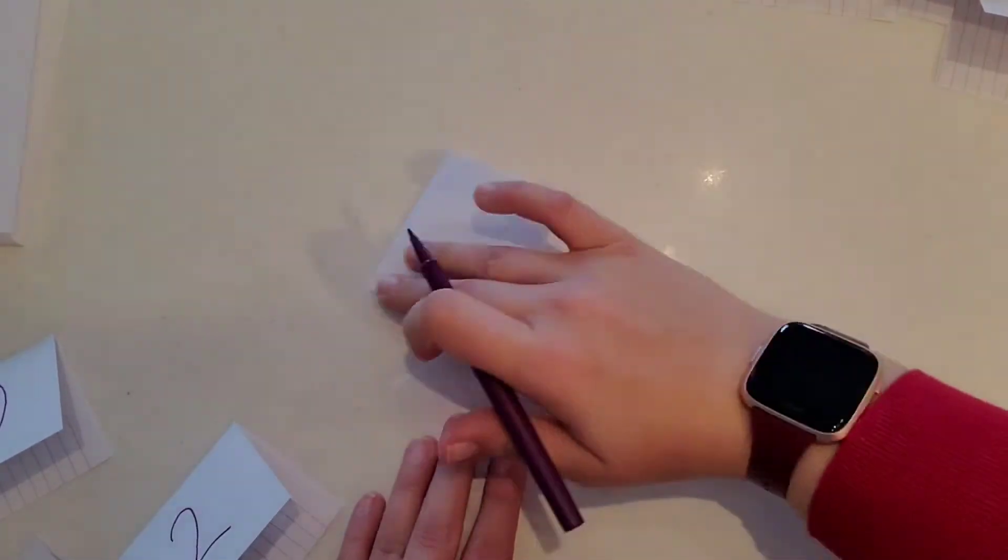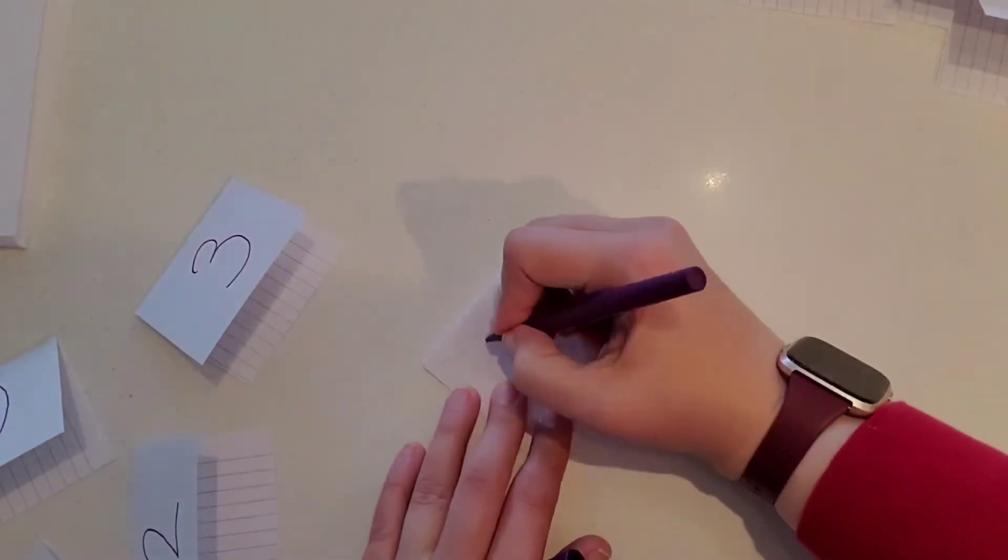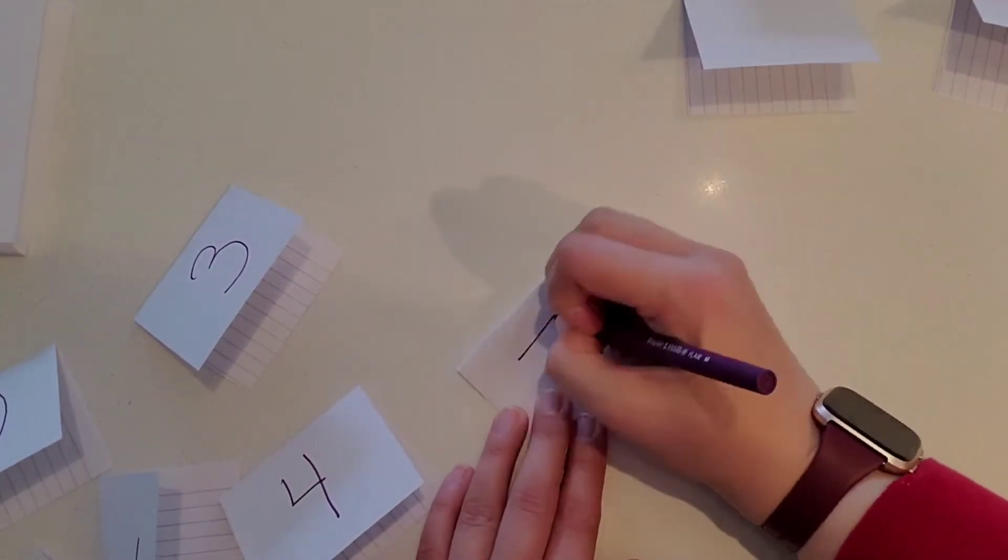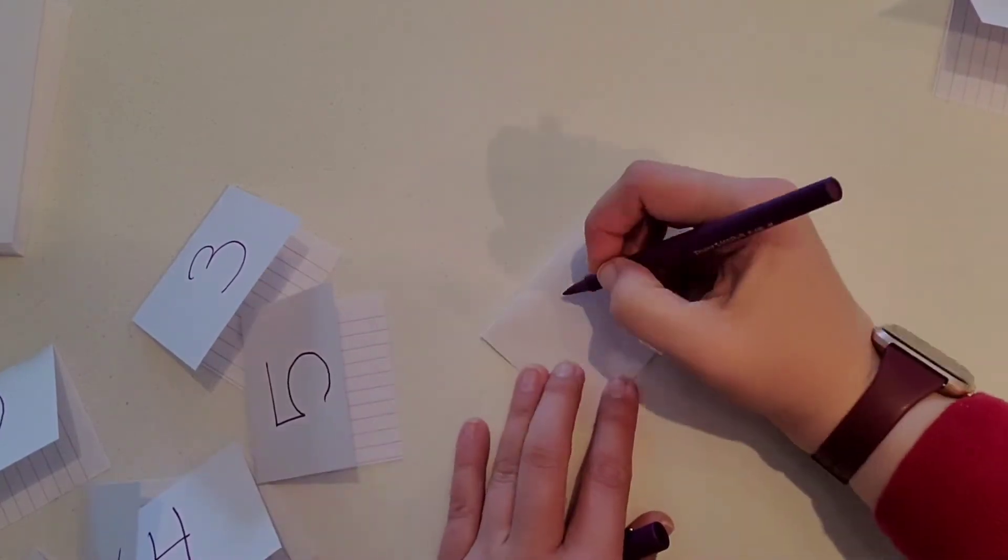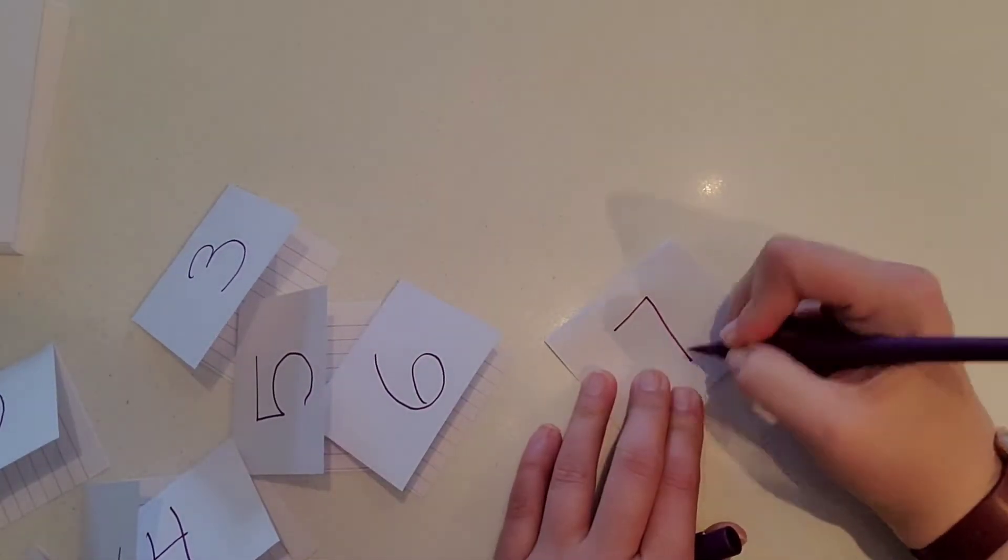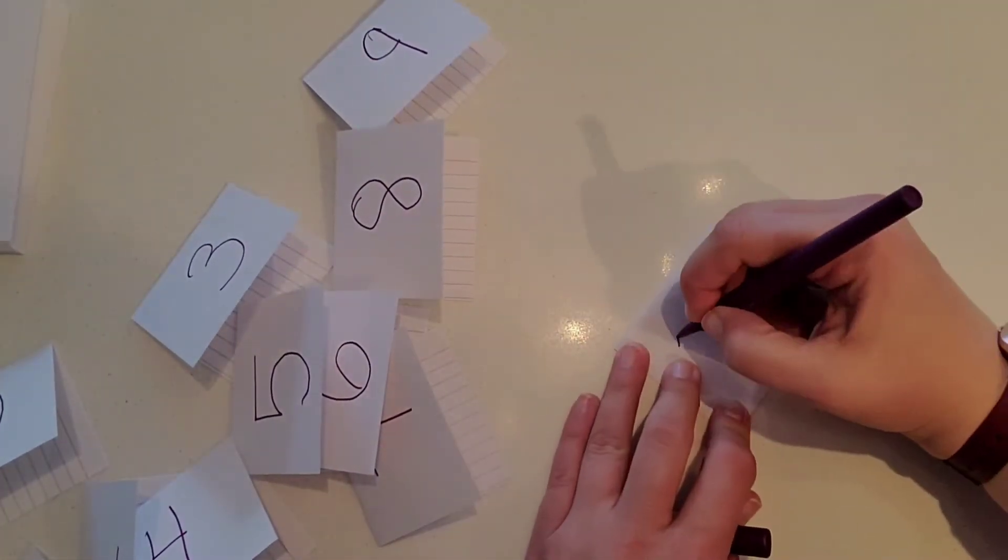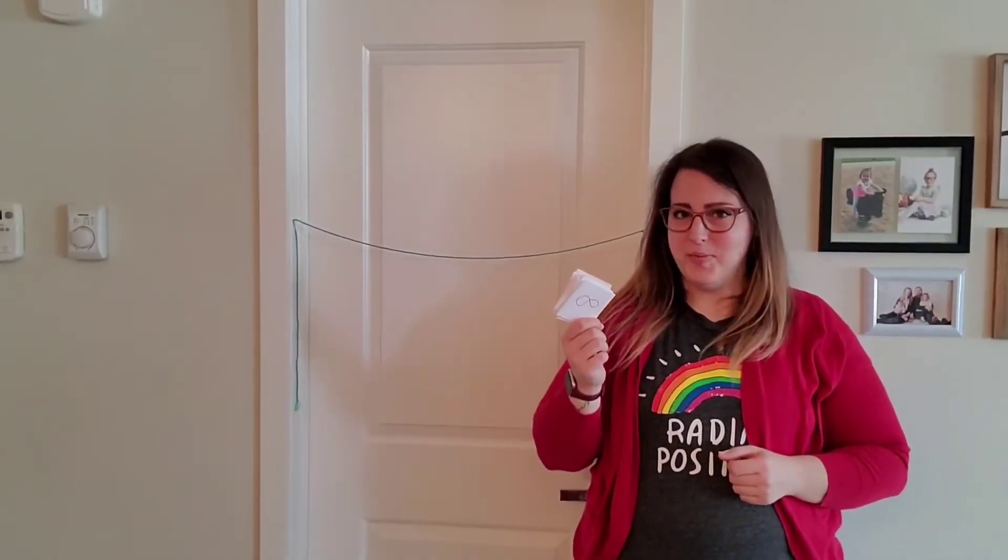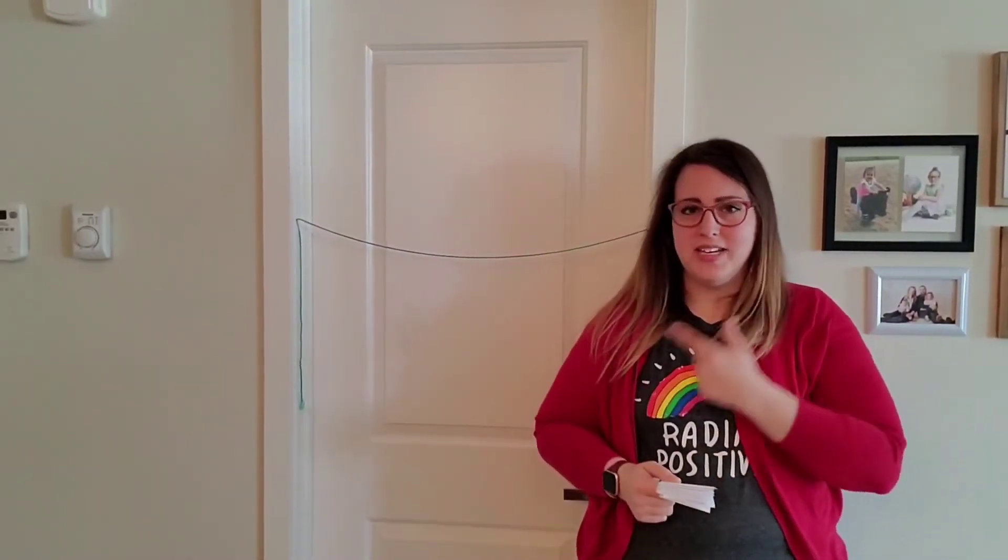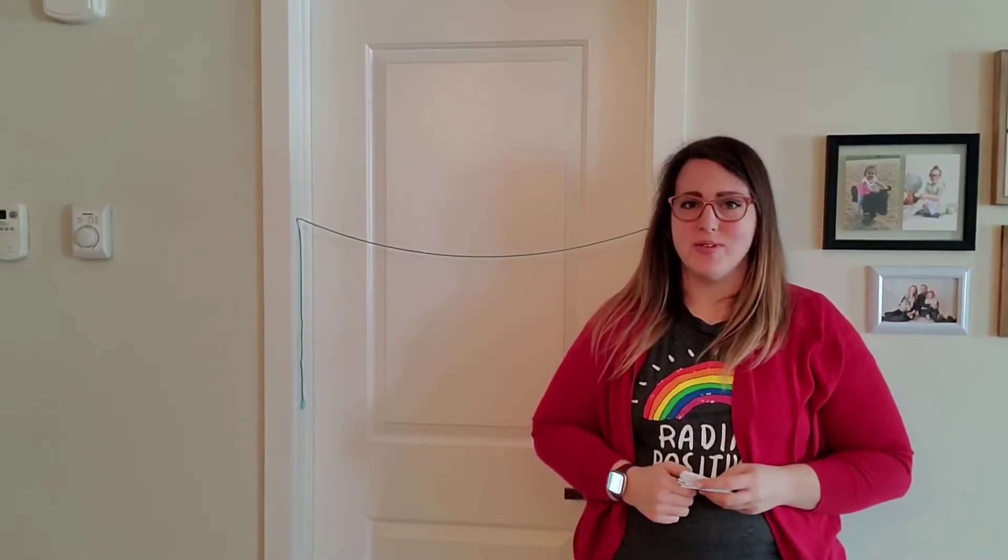Once you have those cut, I want you to write numbers 0 to 10 on each of the cards. Once you've finished making numbers 1 through 10, you're going to hang them in order on your number line.